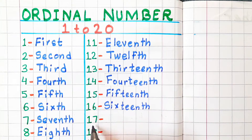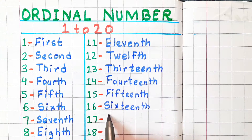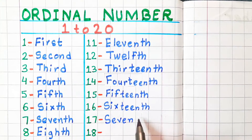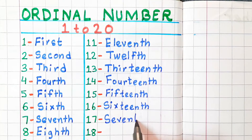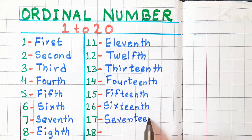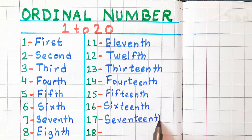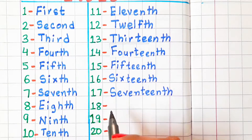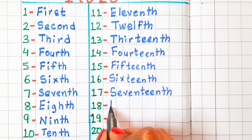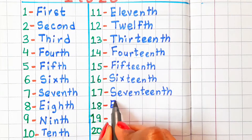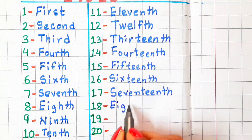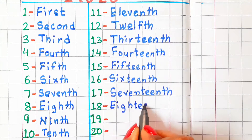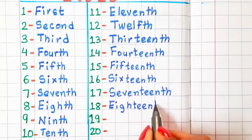17 — in ordinal number, it is called seventeenth. Spelling is S-E-V-E-N-T-E-E-N-T-H. 18 — in ordinal number, it is called eighteenth. Spelling is E-I-G-H-T-E-E-N-T-H.